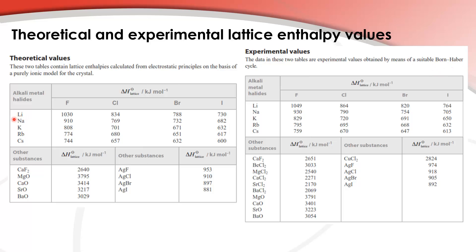If we look at the comparison of sodium iodide, the theoretical value is 682 kilojoules per mole and the experimental value is 705 kilojoules per mole. This means that the bonding in sodium iodide is stronger than you would expect from the theoretical value.